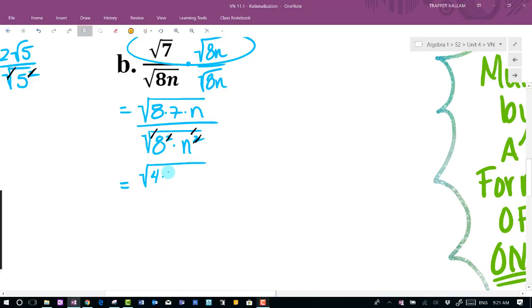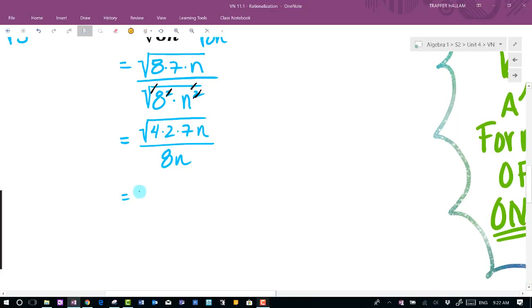It's going to turn into four times two times seven times n. All right, in the denominator, I'm going to be left with an eight and an n, exactly what I want. Now there's no more radical in the denominator. So let's clean this up a little bit more, again showing all of my steps. So I'm going to get two squared times two times seven, which is going to make 14 times n.